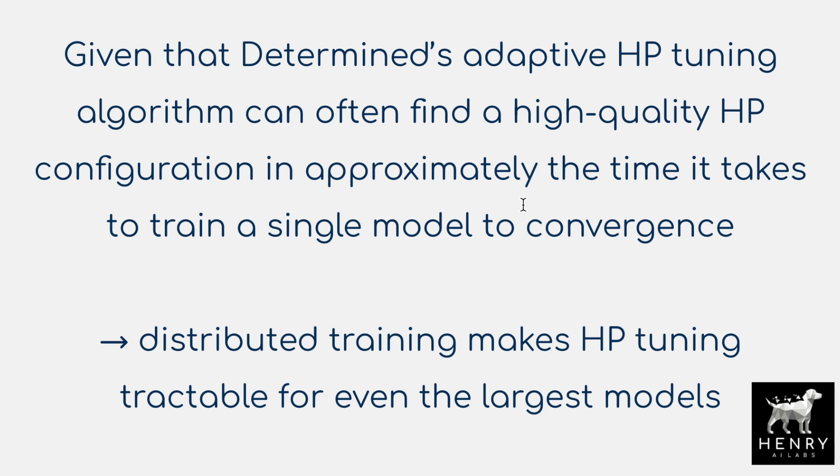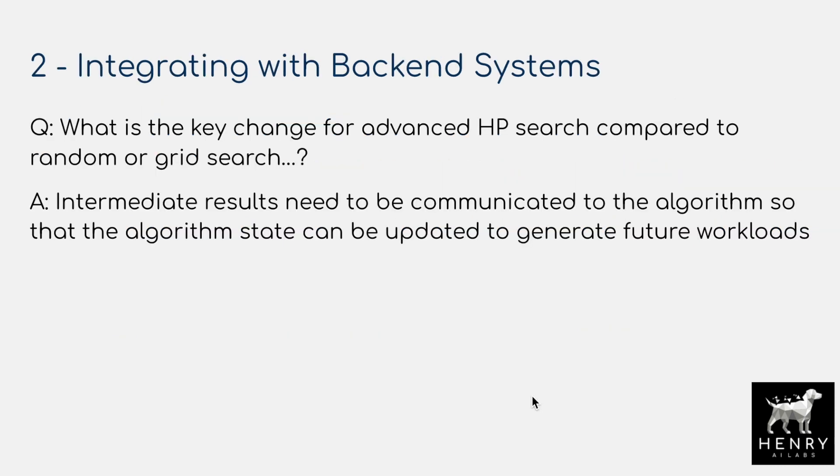The next major point is integrating with back-end systems. We have distributed workers that each take a configuration and optimize it. Even though the asynchronous algorithm tries to get away from centralized updates as much as possible, you still have communication with the back-end system to pause and resume training. The key change for advanced hyperparameter search compared to random or grid search is that intermediate results need to be communicated to the algorithm so its state can be updated to generate future workloads. This is true for evolutionary search, reinforcement learning search, and Bayesian optimization.